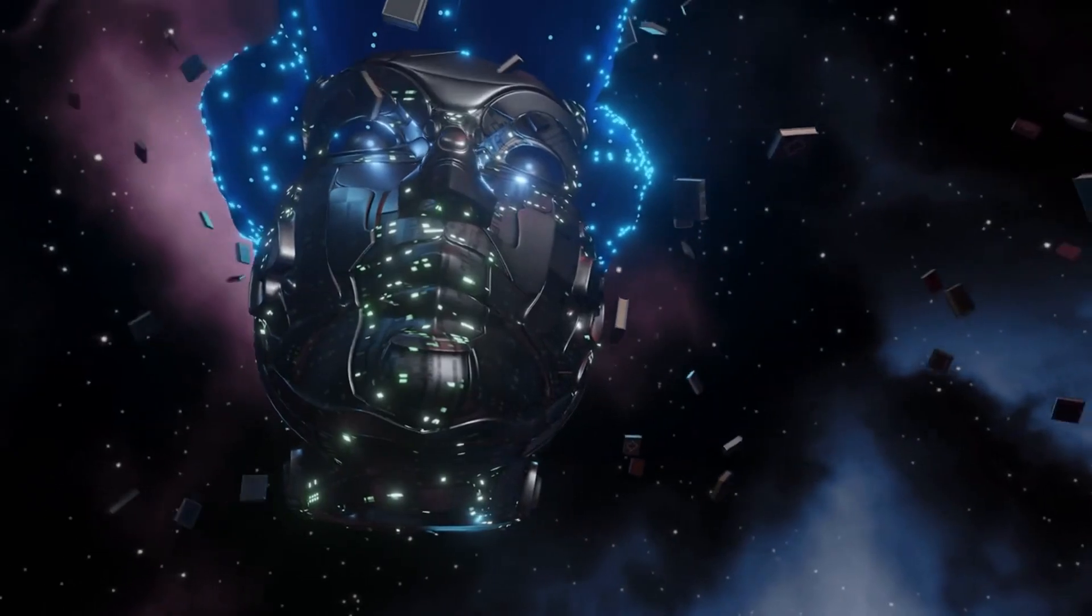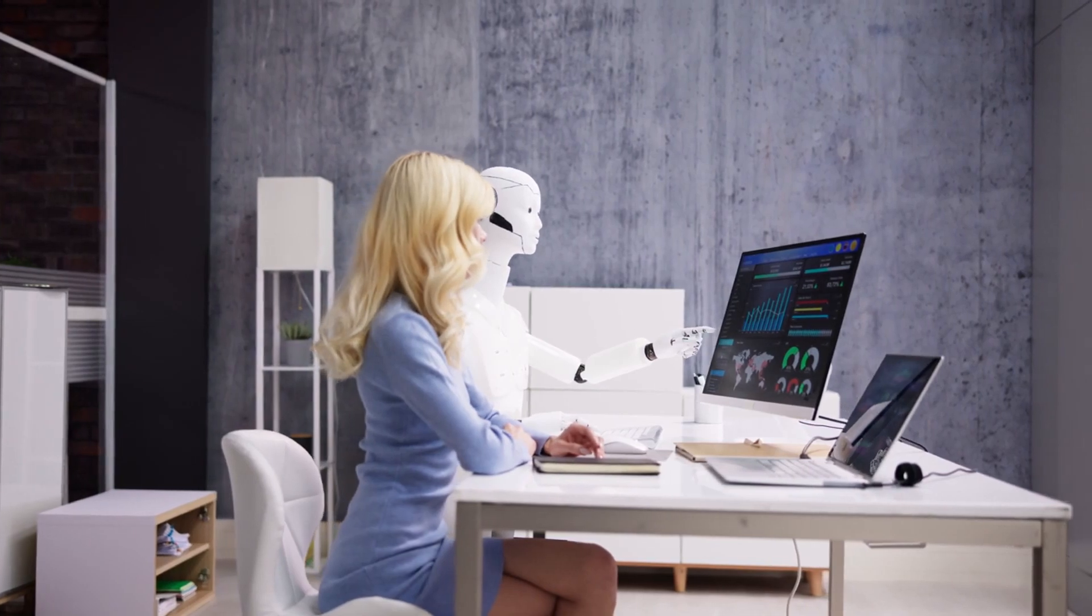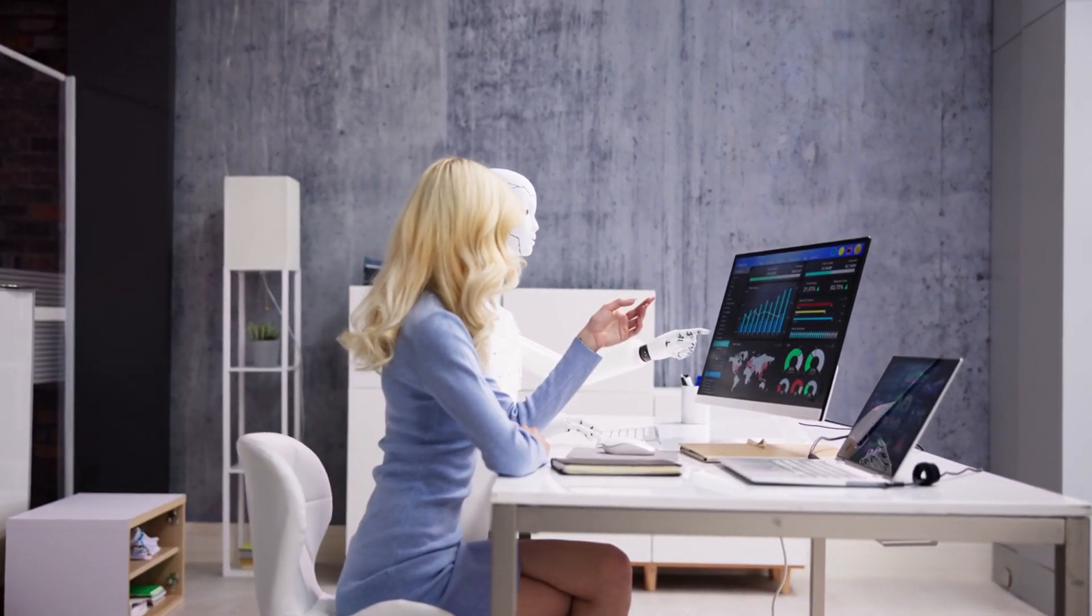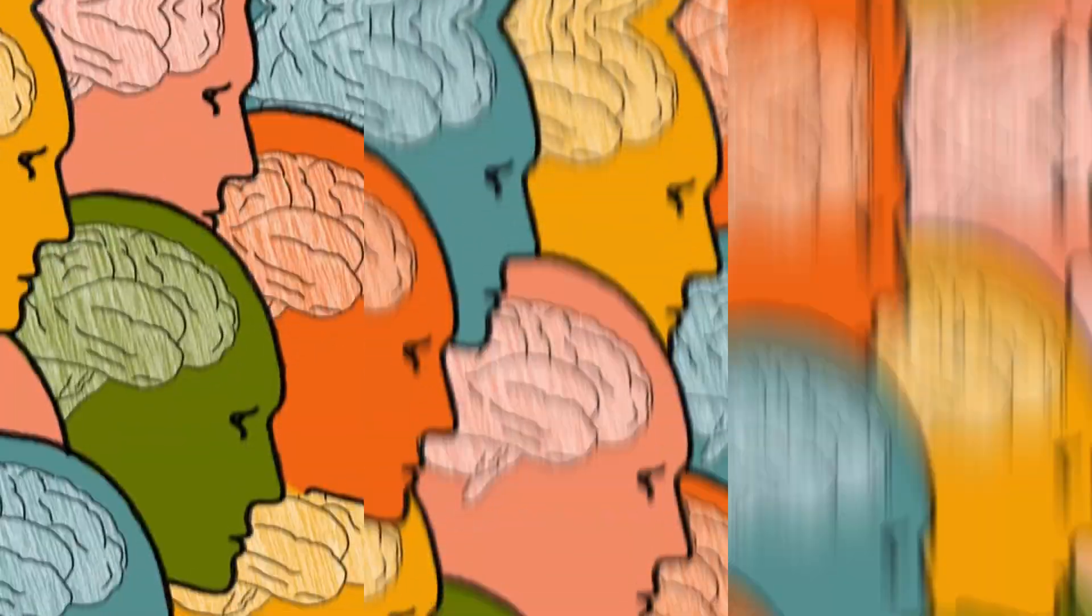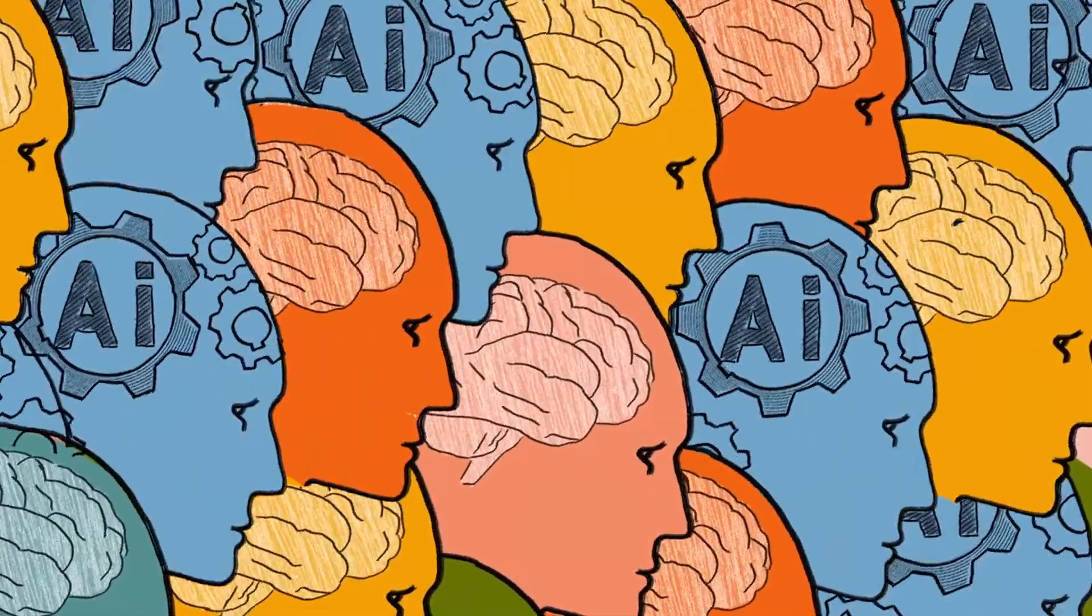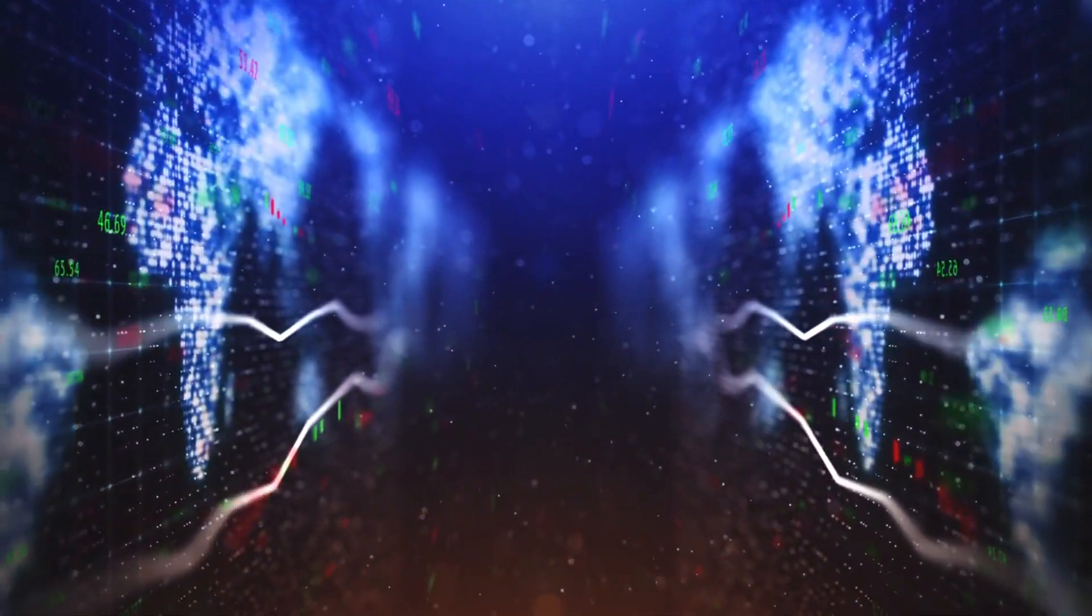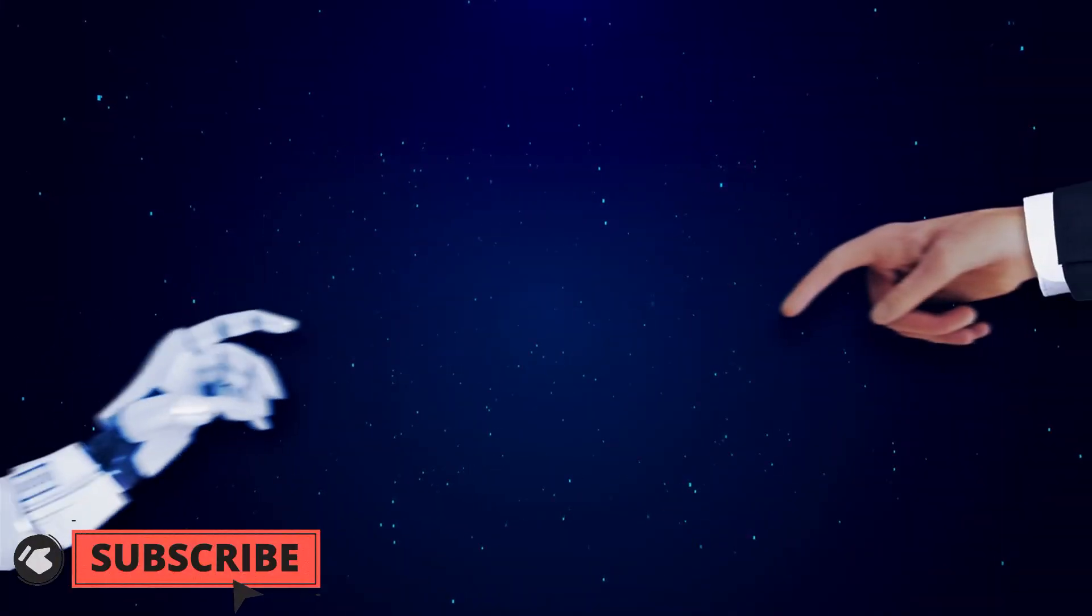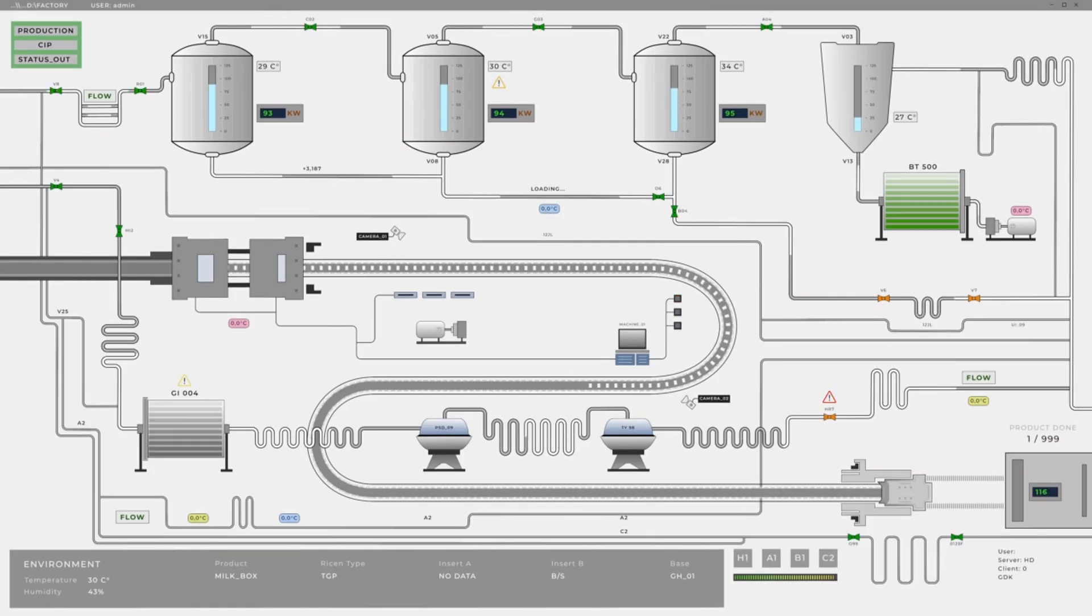But before we crown him the AI overlord, there are some things to consider. Let's delve into the current state of AI, exploring its real-world impact and potential for predicting financial success. We'll also dive deeper into Neuralink's science and analyze its feasibility and potential benefits. While Musk's Neuralink might be the flashy headline, it's just one piece in the larger puzzle of AI's impact on the global economy. So, is AI truly the key to unlocking financial dominance? Or is it just hype?